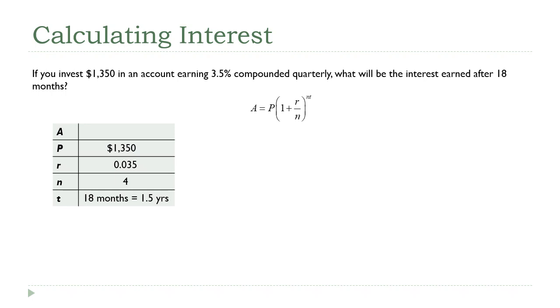The missing variable, the variable they don't have a value for, is A. That's the final amount, but that's not what we were asked for. We were asked to find the interest. And that's actually okay. Hold on to that. We'll circle back once we've calculated this A value. If I put those numbers into the formula,